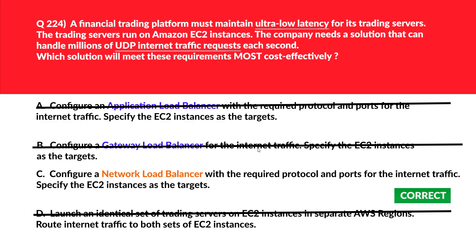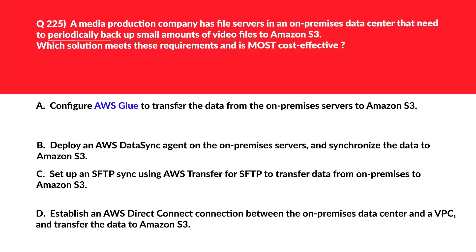This question is about periodically backing up small amounts of data to S3. Option A says configure AWS Glue. AWS Glue is used for ETL operations, not for copying data as required — incorrect. Option B says deploy an AWS DataSync agent on the on-premises server and synchronize the data to Amazon S3. AWS DataSync is designed for efficient, automated, and cost-effective data transfer between on-premises storage and AWS, making it ideal for periodic backup. Let's park this.